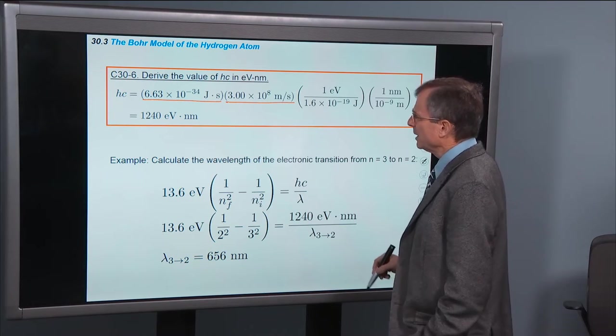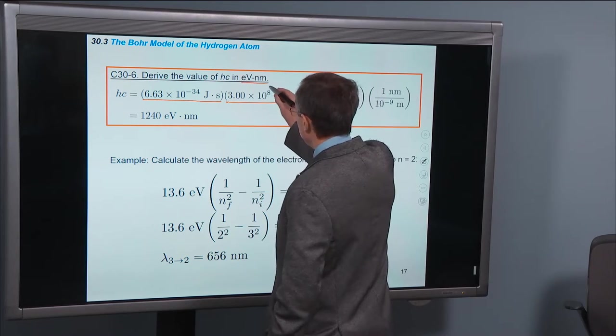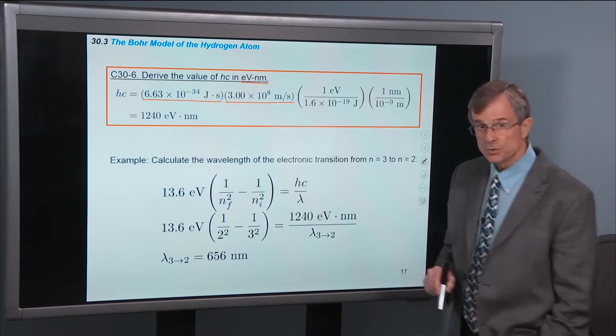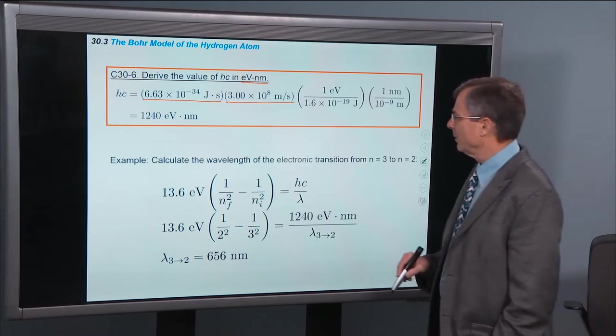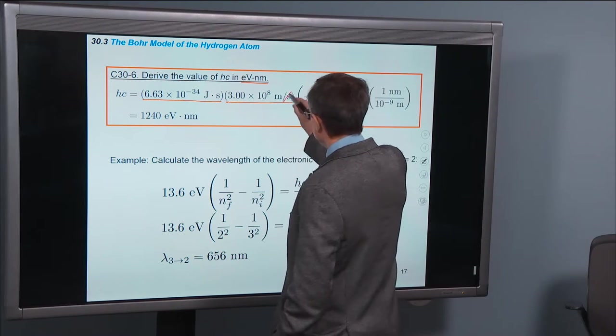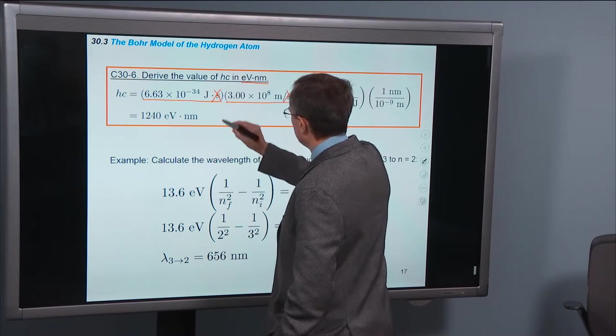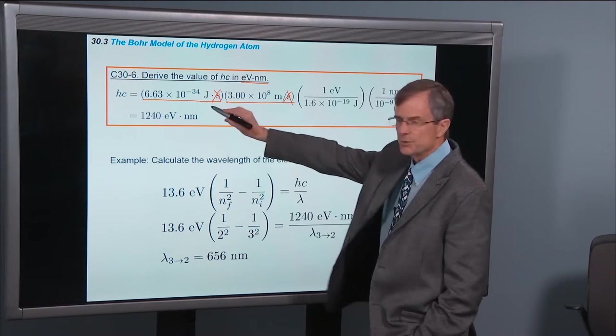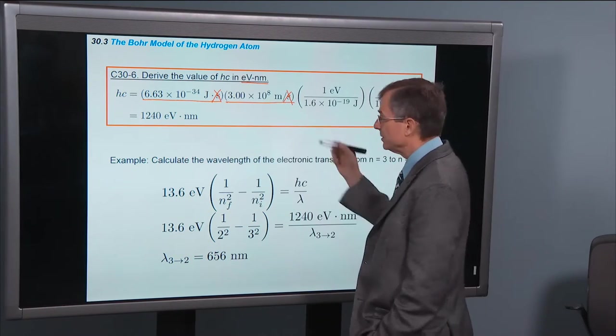But I want to convert this into eV nanometers. So I want to convert the joules into eV, and I want to convert the meters into nanometers. The seconds actually cancel. So all I have to do now is to convert joules into eV and meters into nanometers.